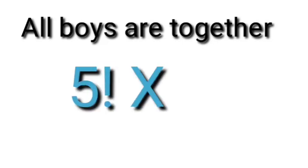Next part: all boys are always together. This is our string method question. We have 4 girls and 1 string of boys, giving 5 total units to arrange: 5 factorial. Inside the string we arrange 4 boys, so we multiply by 4 factorial.